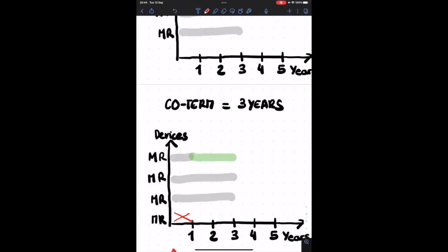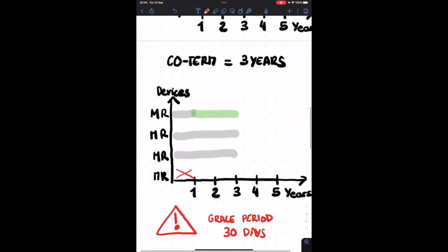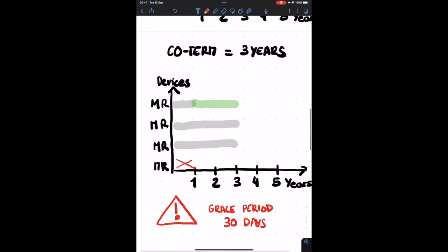To solve this, what we need to do is add a license in the mode of add devices. No matter which duration—it can be one year, three years, five years—we need to add a license to solve this.